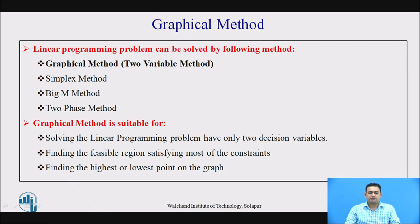The graphical method is suitable for solving the linear programming problem having only two variables. It finds the feasible region satisfying most of the constraints present in the problem, and helps to find the highest and lowest point on the graph, which gives the optimum solution according to the case.